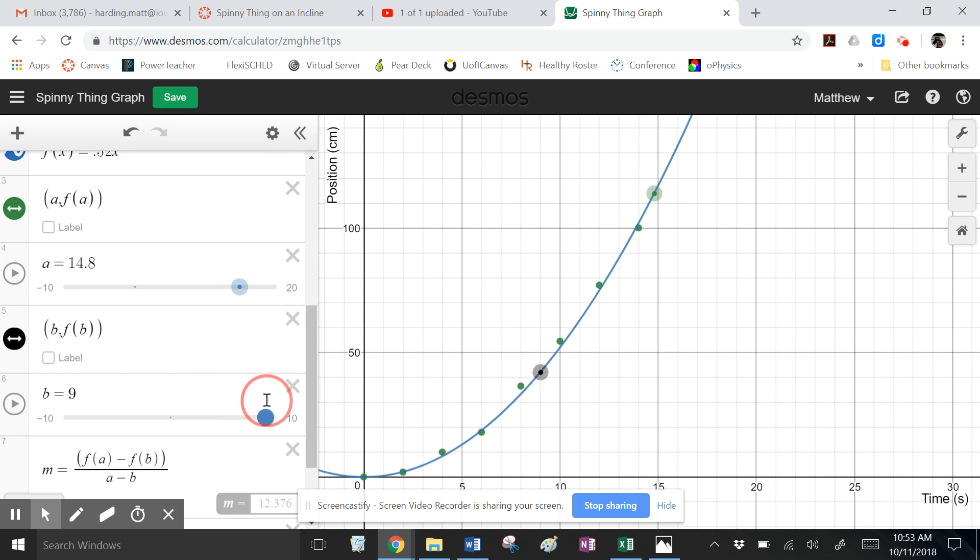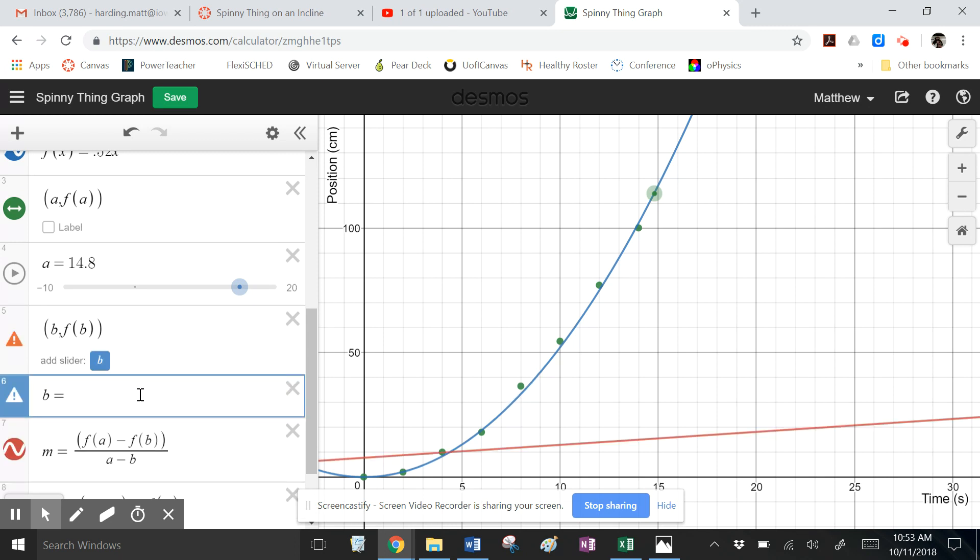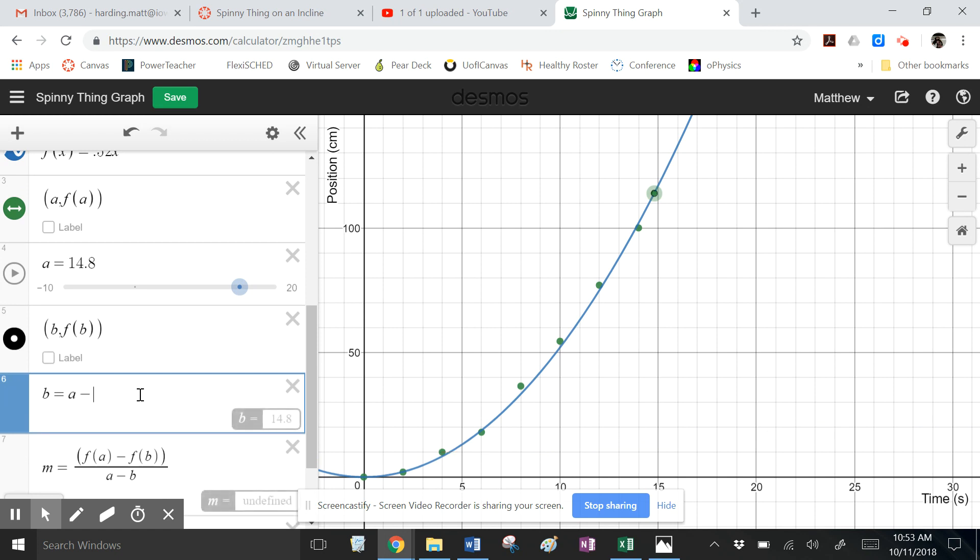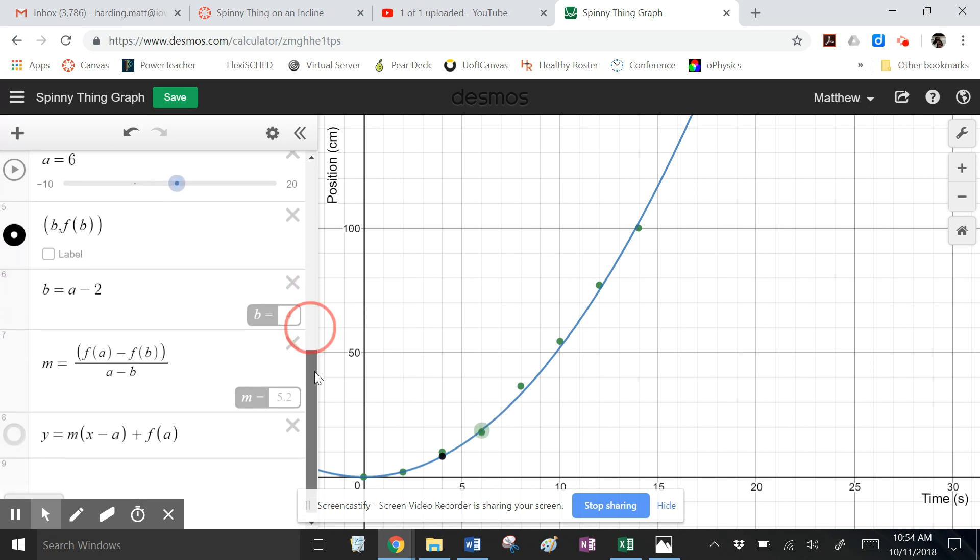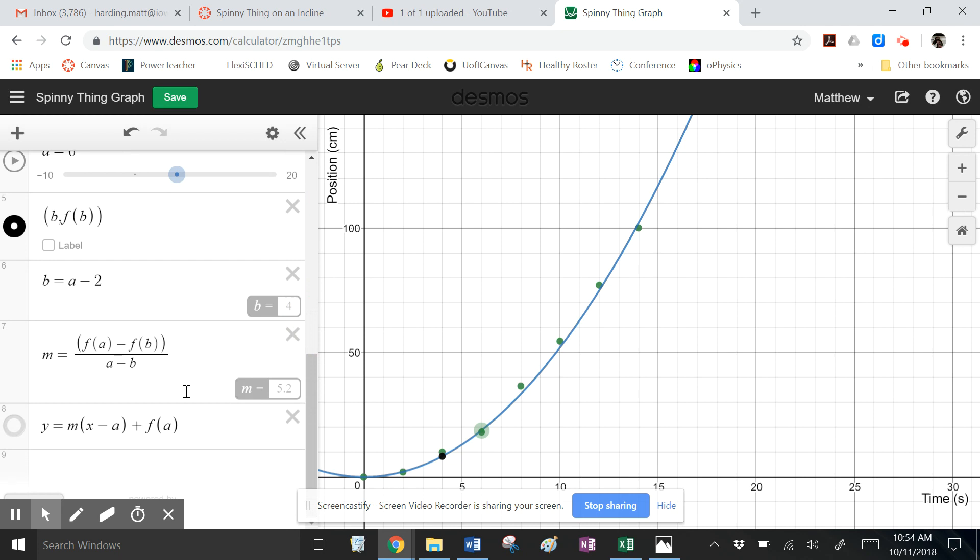Instead, though, what I decided to do was tell it B in terms of A. So I said B is going to be A minus 2, so minus 2 seconds. Now when I move A, you can see B moves with it, so they're always 2 seconds apart.